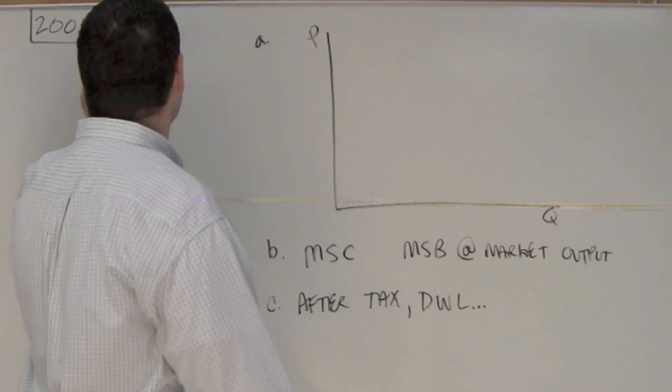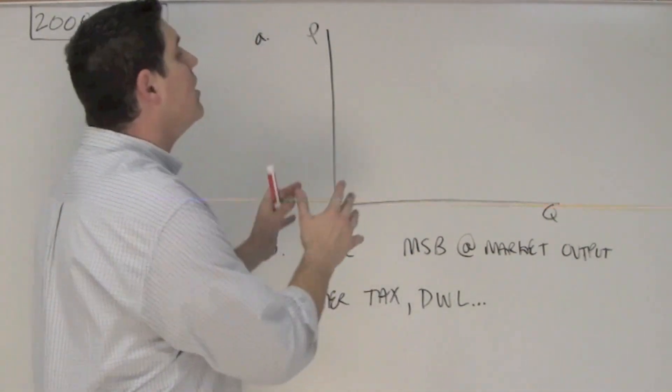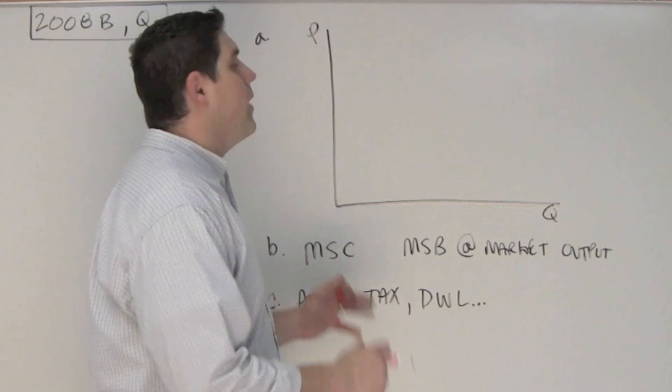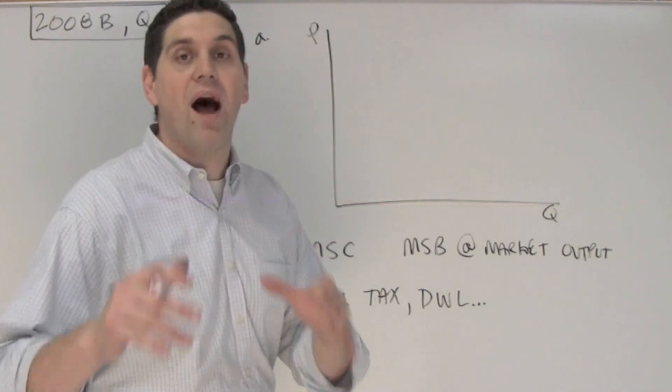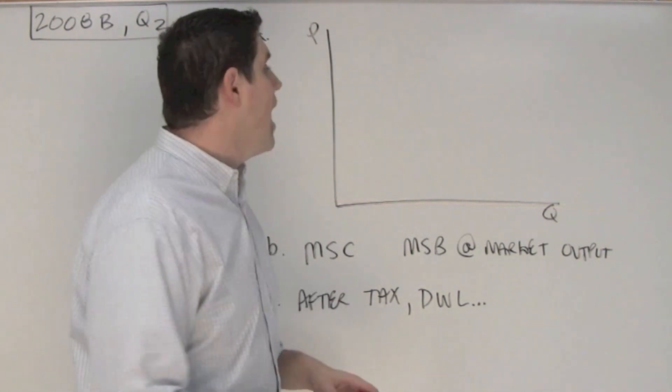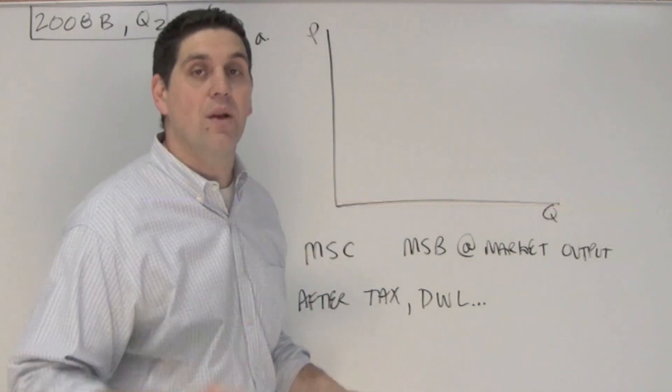All right, here's a great question from 2008 question 2 that's clearly on positive externalities and your ability to draw the graph. In this question you analyze vaccines, which it tells you is a positive externality. So it asks you to draw the graph of market price and quantity and the quantity that's socially optimal and deadweight loss.